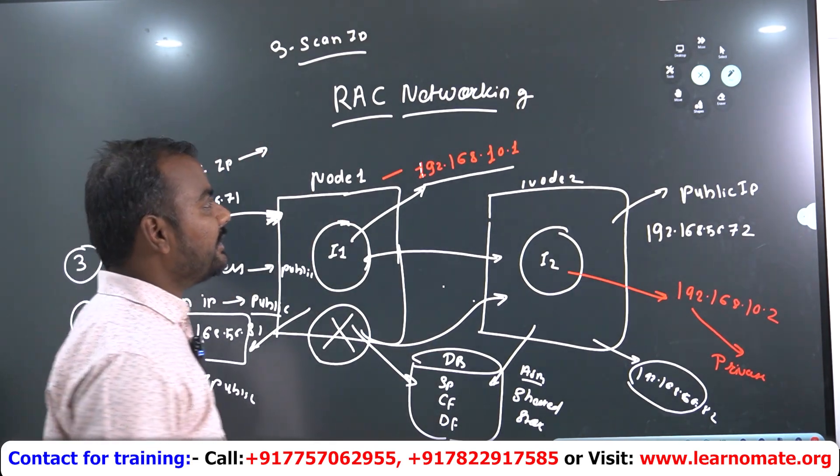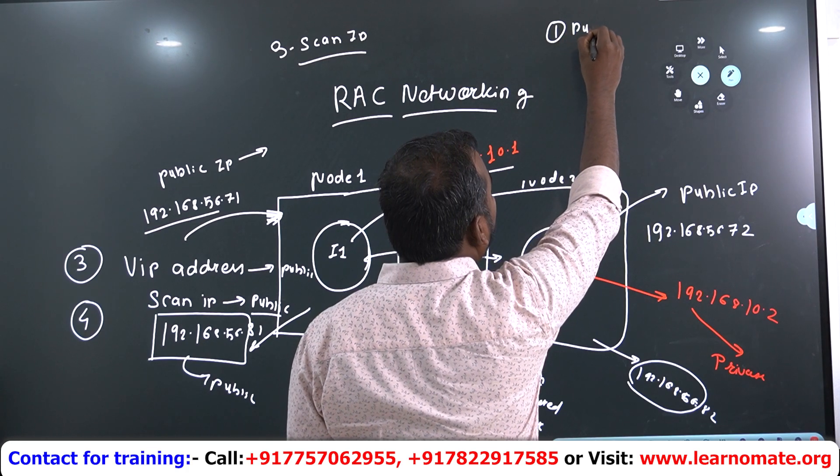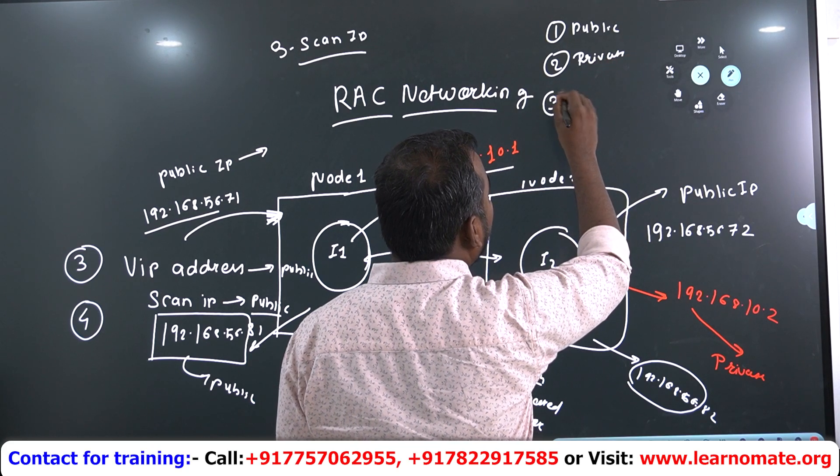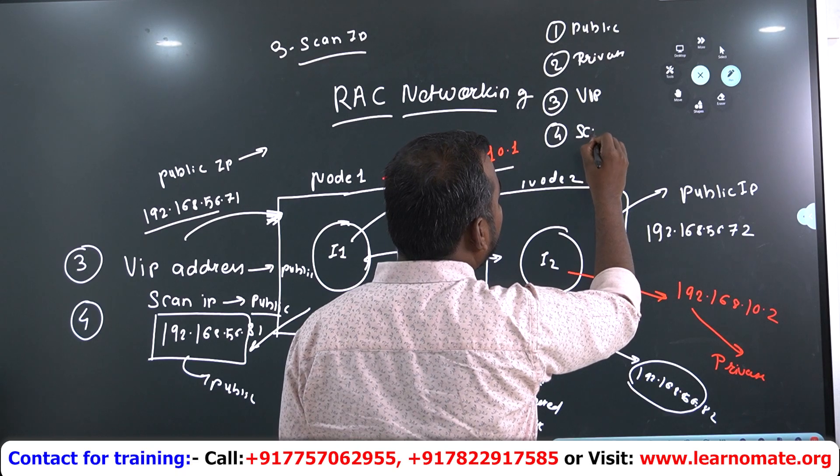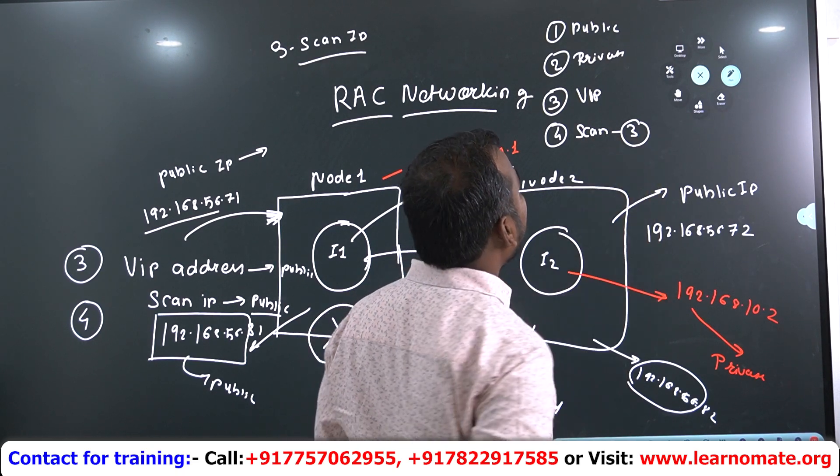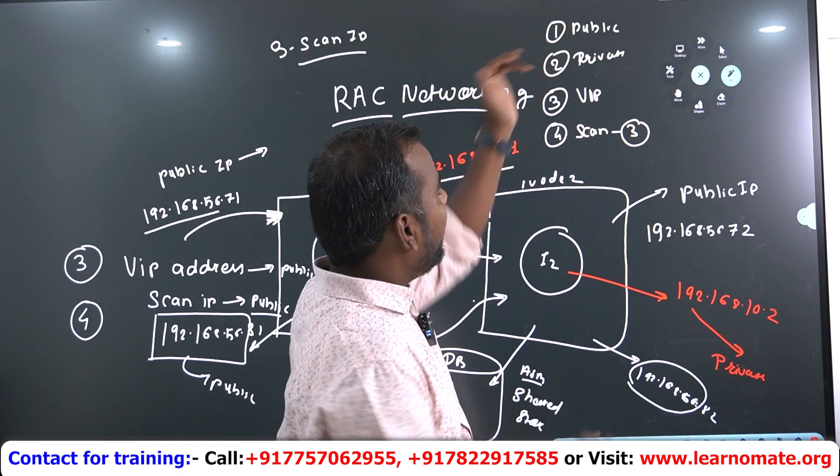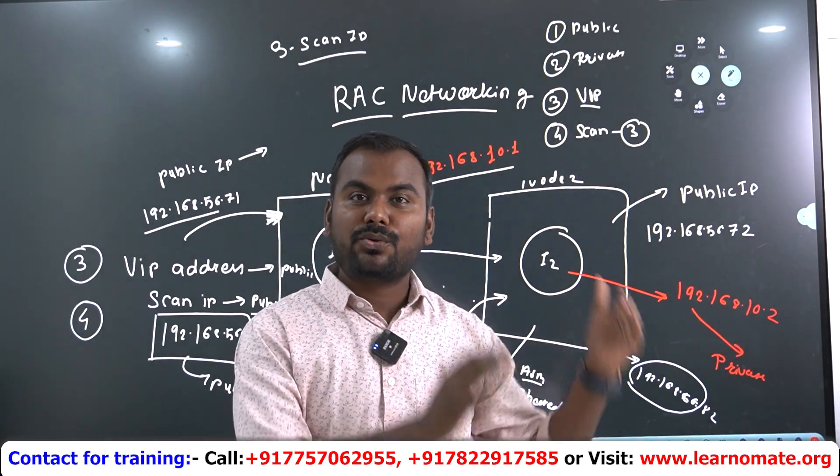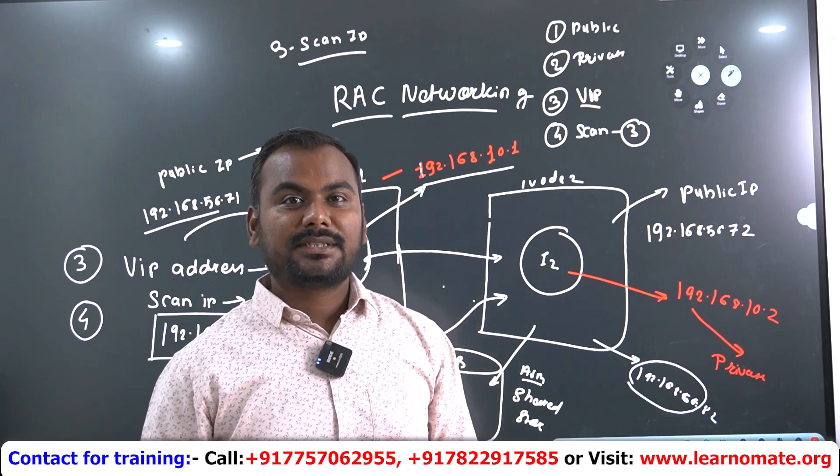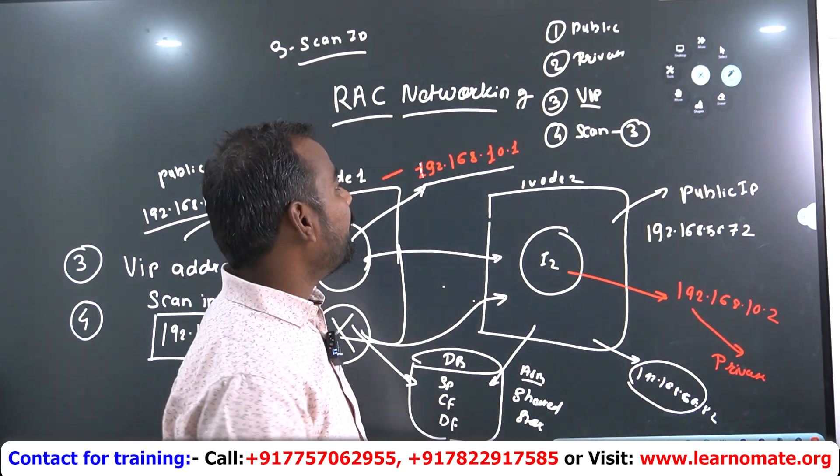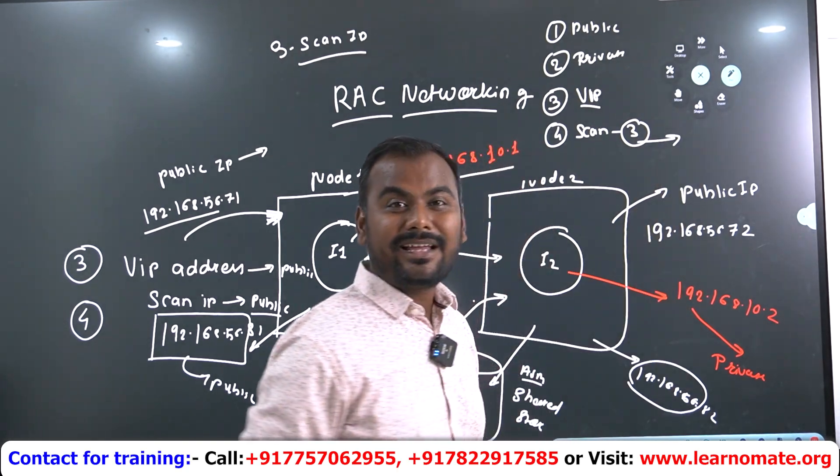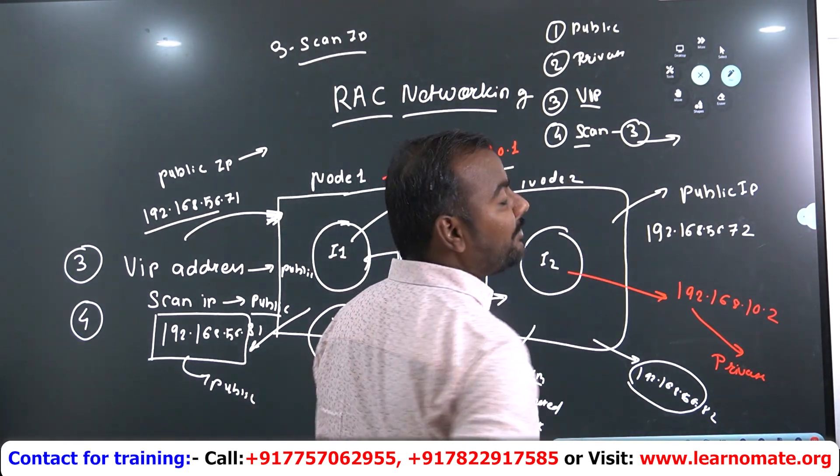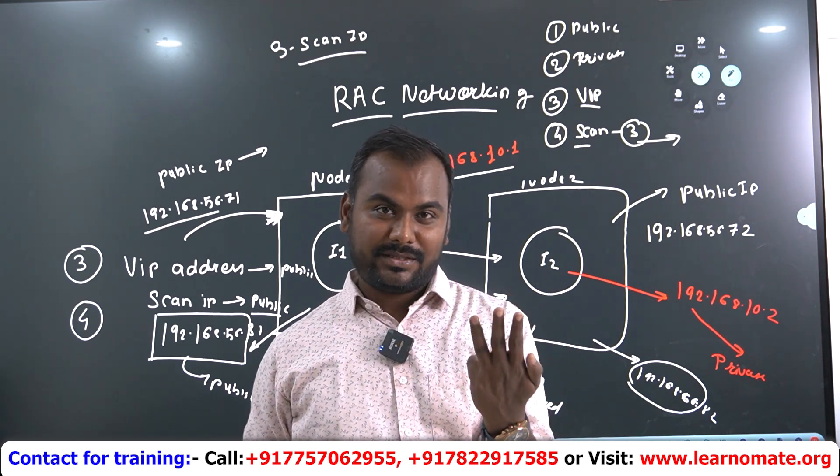So till now, what are all IPs we have discussed? We discussed about the public IP address, the private IP address, then third one will be VIP and fourth one will be SCAN IPs. There will be three SCAN. And every node will have one public, private, one VIP and three SCANs will be there. So three SCANs is shared in between your node 1 and node 2. One more thing I want to tell you, this SCAN will have three IPs but their name will be a single SCAN. Single name will be there for your three SCAN IPs.